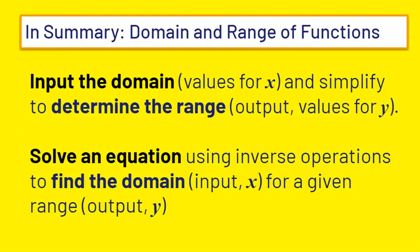In summary: domain and range of functions. You input the domain — putting it into the function in place of the variable x — then simplify to determine the range or output, which are the y values. To find a domain for a given range, solve an equation using inverse operations: take each y value, set it equal to your function, and solve to find your input or domain.